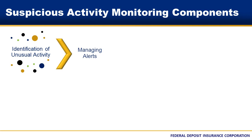The second component is managing alerts, which focuses on processes used to investigate and evaluate unusual activity. Management should establish a defined process from the point of the initial alert or detection to the disposition of the investigation. The third component is SAR decision making. After the bank researches and analyzes the unusual activity, someone at the bank — either an individual or a committee — makes a final decision on whether to file a SAR. The decision-maker should have the authority to make the final SAR filing decision. Banks should document SAR decisions, including the specific reason for filing or not filing a SAR.